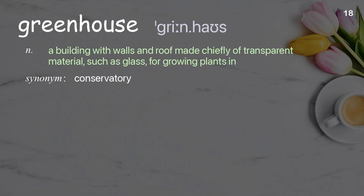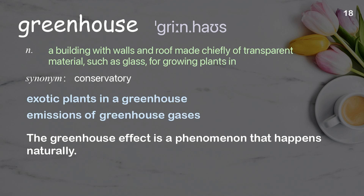Greenhouse: a building with walls and roof made chiefly of transparent material such as glass, for growing plants in. Examples: exotic plants in a greenhouse; emissions of greenhouse gases. The greenhouse effect is a phenomenon that happens naturally.